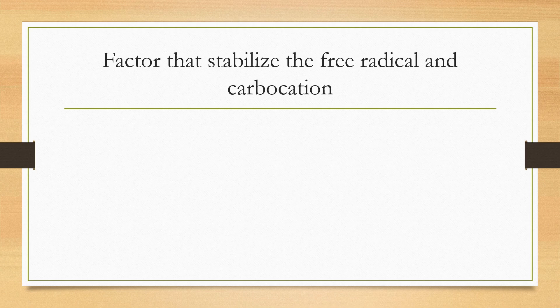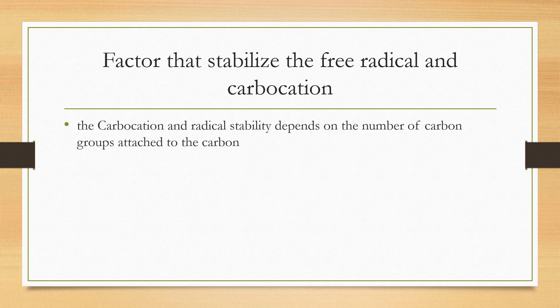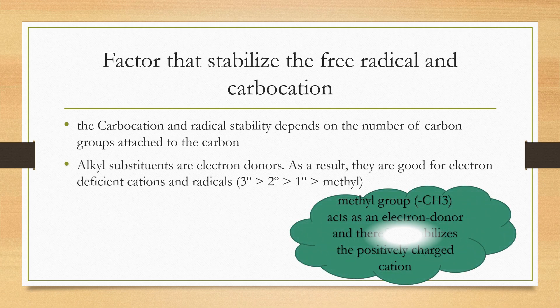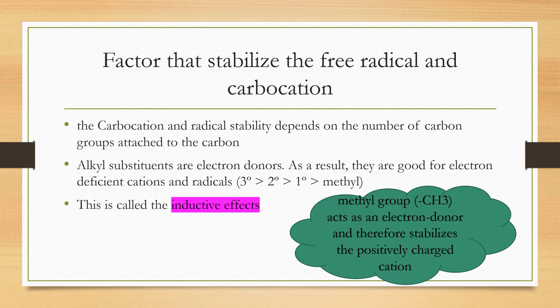The factors that stabilize free radicals and carbocations depend on the number of carbon groups attached to the carbon. Alkyl substituents are electron-donor groups, so they are beneficial for electron-deficient cations and radicals. The presence of alkyl groups in compounds helps stabilize unstable carbocations and free radicals. This process is called the inductive effect.